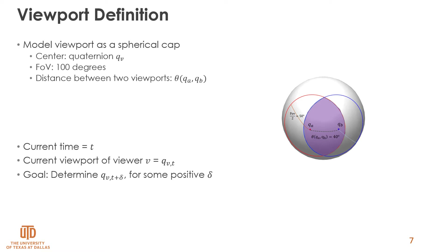The center of viewport is denoted using quaternions. For viewer v at time t, we show the viewport with q sub v,t. The goal of prediction is to determine the viewport at time t plus delta. The distance between two viewports is defined as the great circle distance between the two viewport centers, denoted by theta. Using spherical cap modeling, we can find the overlap between two viewports using the formula for the surface area of the intersection of two spherical caps, which only needs the field of view and the distance between the two viewports.